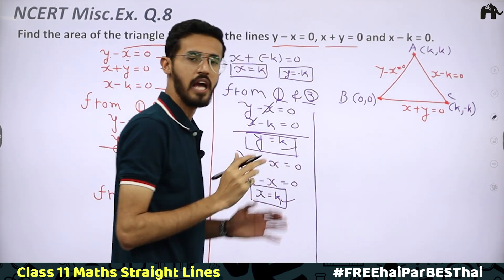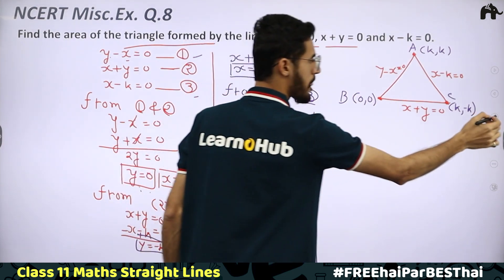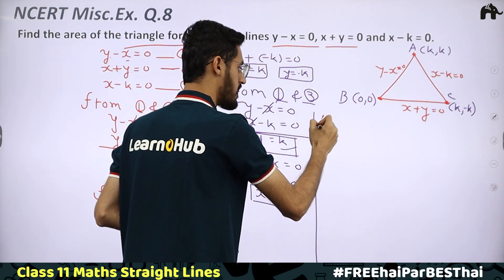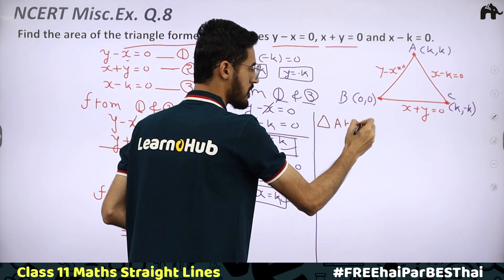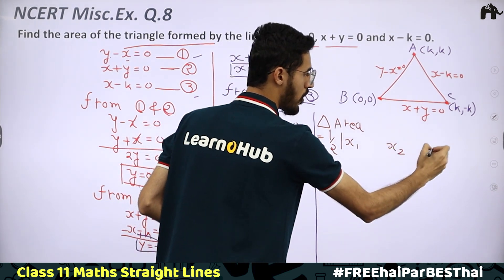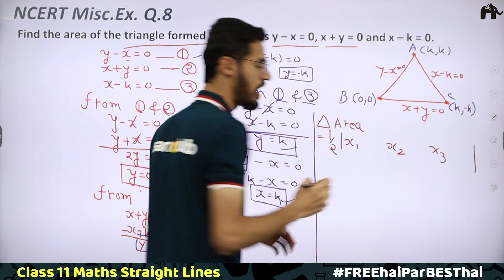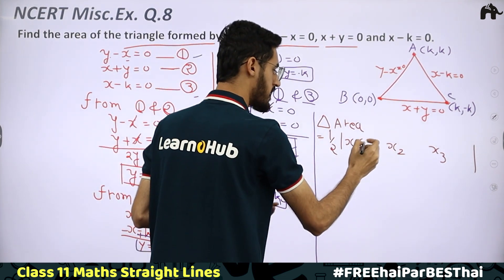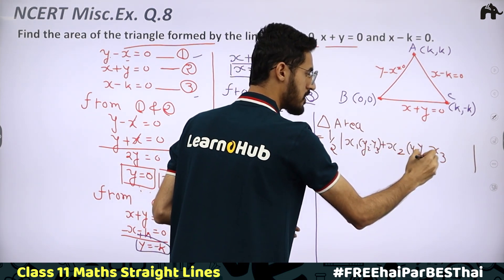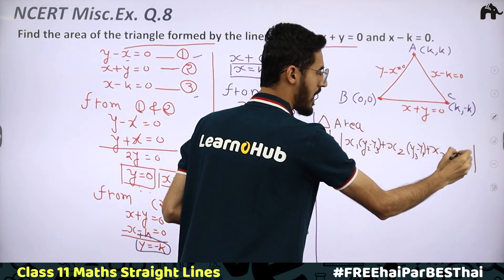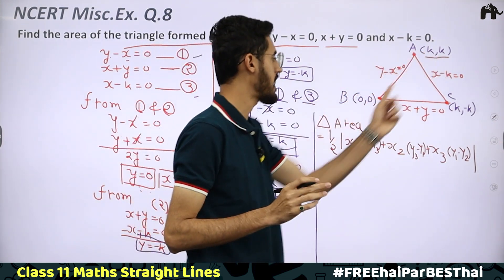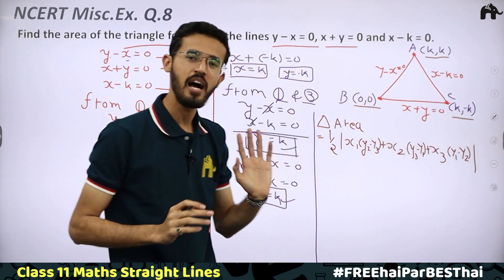The area of a triangle with vertices (x₁, y₁), (x₂, y₂), (x₃, y₃) is: Area = (1/2)|x₁(y₂ − y₃) + x₂(y₃ − y₁) + x₃(y₁ − y₂)|. Substituting: x₁ = k, x₂ = 0, x₃ = k; y₁ = k, y₂ = 0, y₃ = −k.